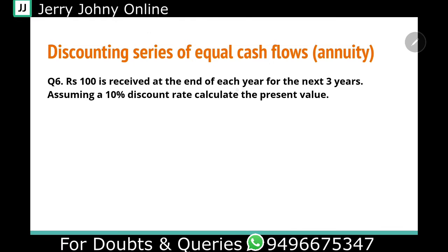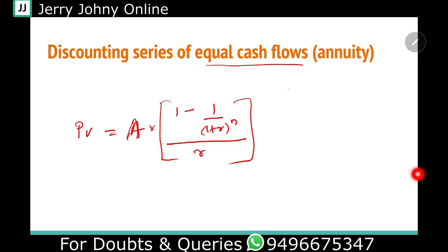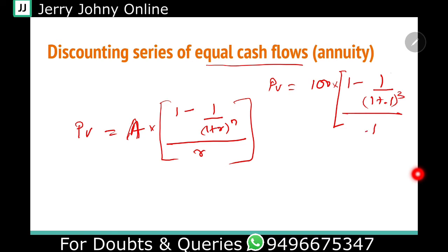Let's do a problem. Rs.100 is received at the end of each year for the next three years. Assuming a 10% rate of discount, calculate the present value — that is the formula method. Present value is equal to the annuity amount of Rs.100 into 1 minus 1 by (1 plus 0.1) raised to 3, whole divided by 0.1.